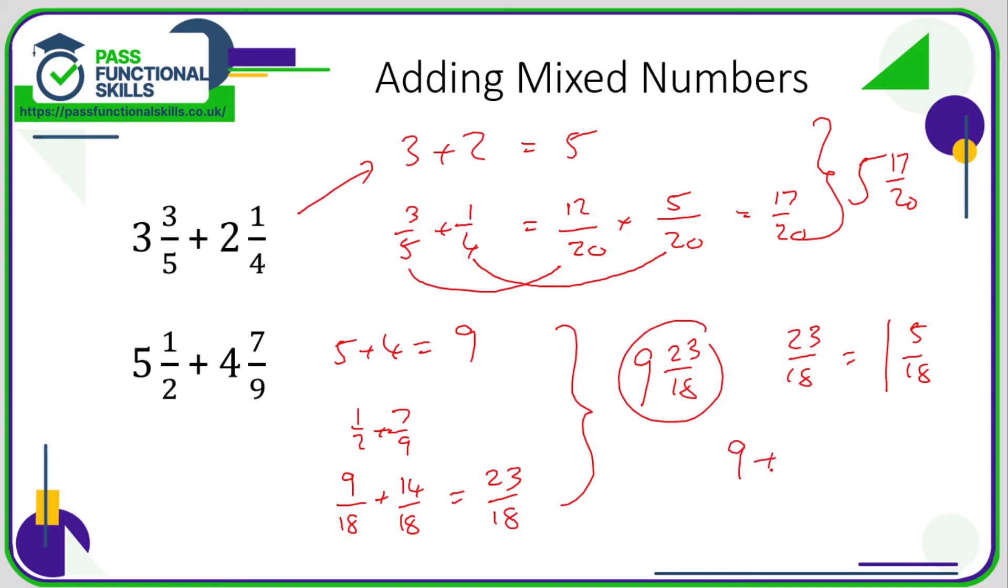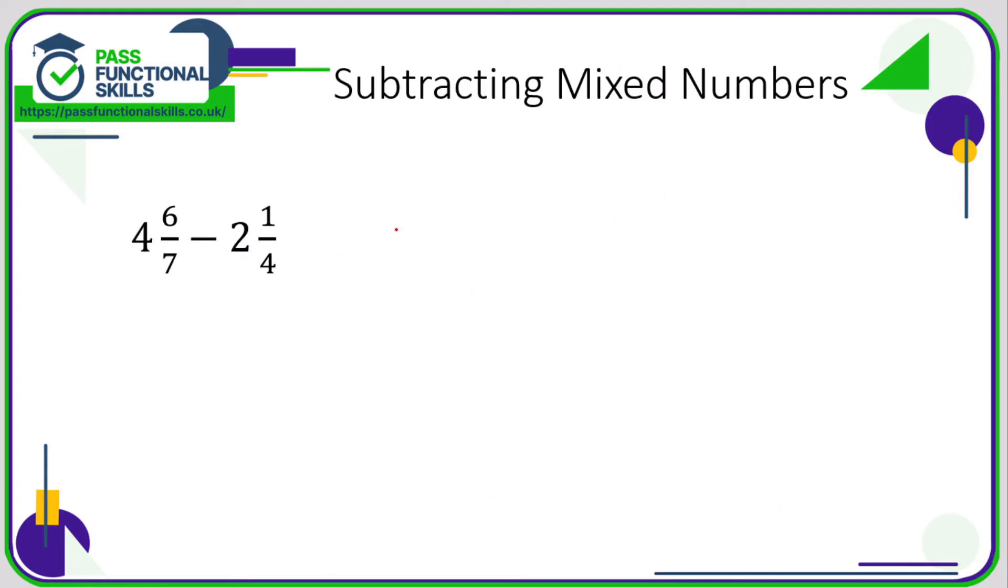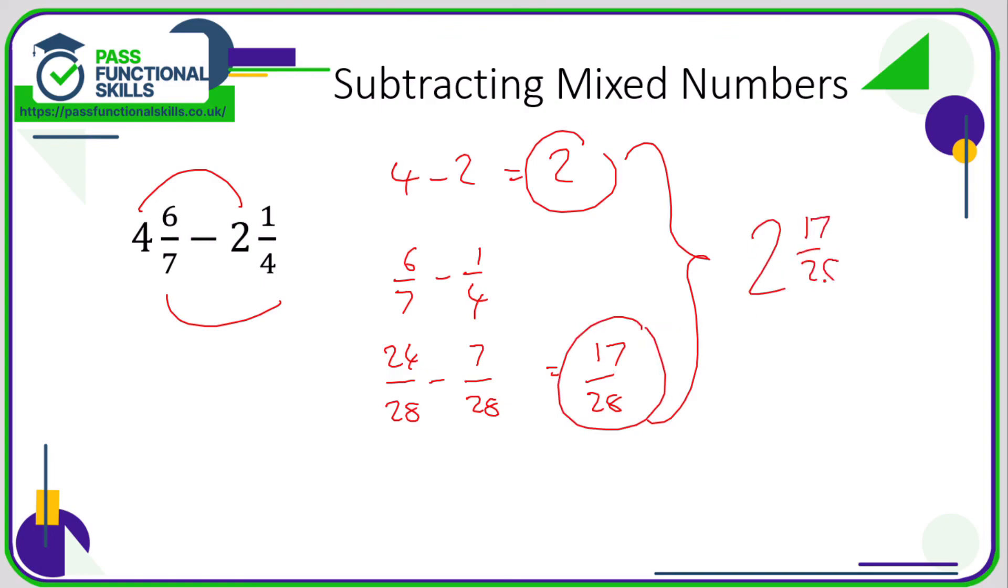Subtracting mixed numbers, again a bit like adding, just do it in two stages. So 4 take away 2 is 2. 6 sevenths minus 1 quarter, we're going to be converting these fractions into 28, so that's the lowest number that we can divide by both 7 and 4. To go from 7 to 28 you're multiplying by 4, so 6 times 4 is 24. 4 to a 28 is a times 7, so 1 times 7 is 7. So 24 take away 7 is 17 twenty-eighths. So all we need to do now is just combine the 2 and the 17 twenty-eighths to get 2 and 17 twenty-eighths, and we're done.